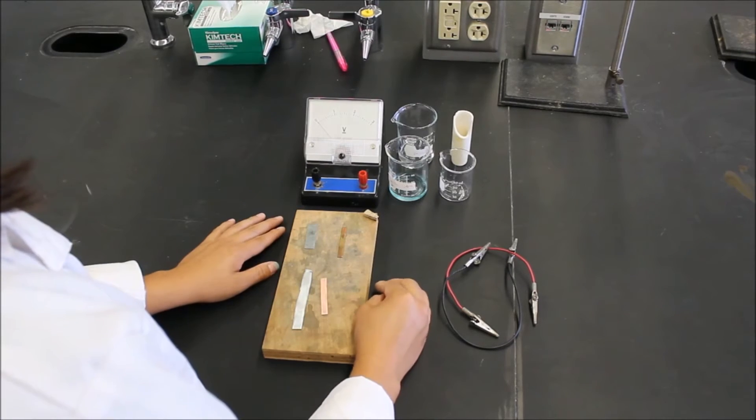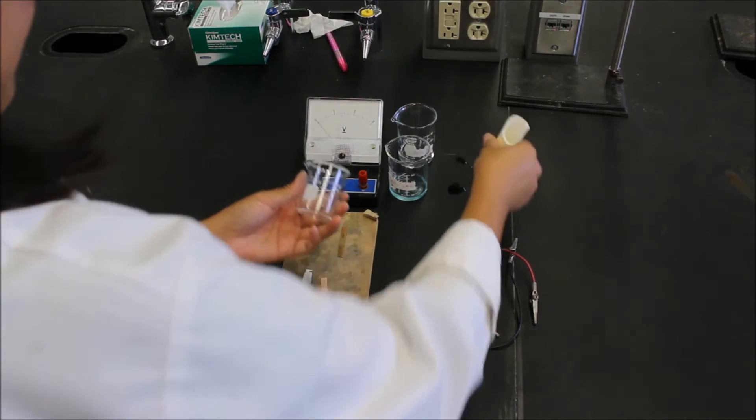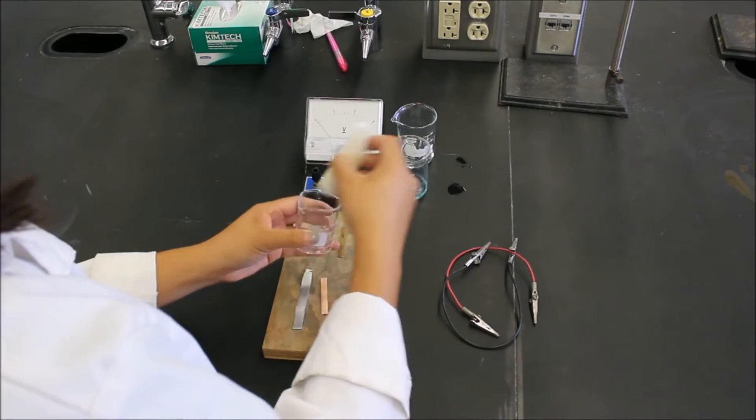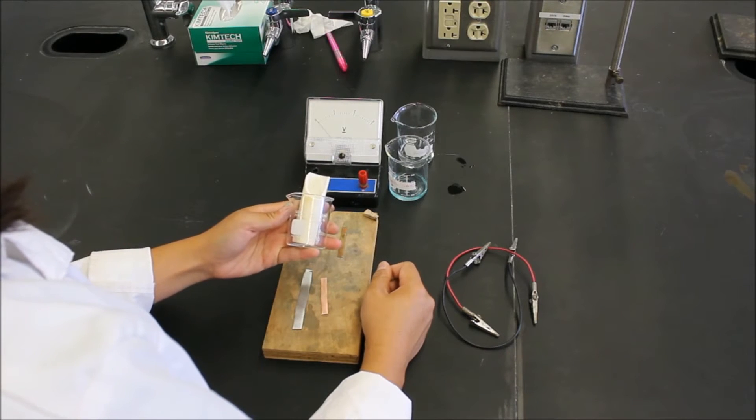So after these are polished, you're going to want to set up your cell. What you'll need is the beaker, 50 milliliters is fine, and the porous cup, which just goes inside. And that's our galvanic cell that we'll be using for this experiment.